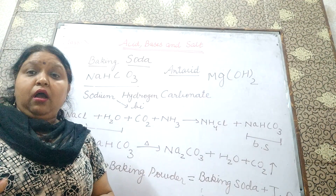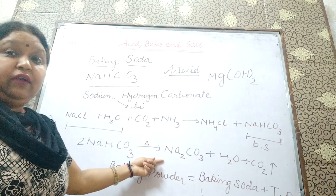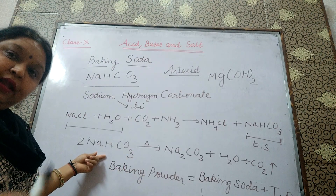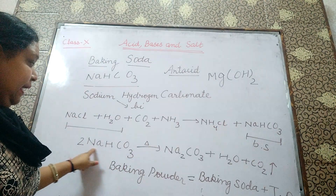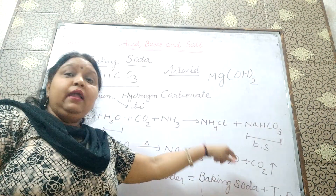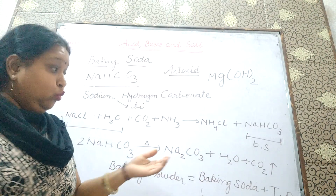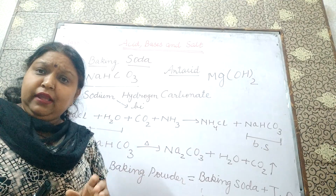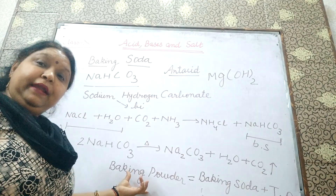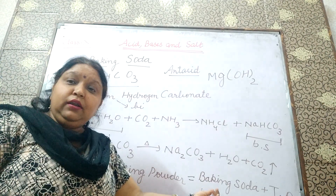Then next we can use baking soda for cooking purpose. When the baking soda is heated, NaHCO3 will give sodium carbonate along with water and CO2. The role of CO2 is that it will make the things soft and fluffy. And baking powder is the mixture of baking soda plus tartaric acid.